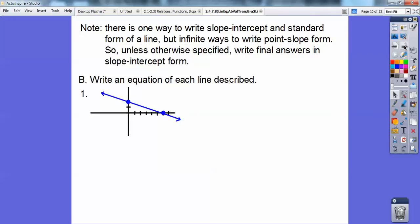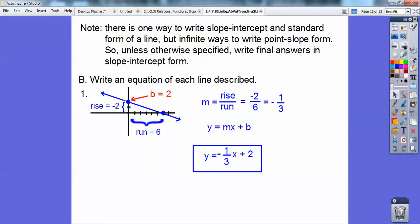Write an equation of each line described. Look at that graph. This is the y-intercept right here, so I know it's going to be y = mx + 2. And then my slope, they gave me a picture, so the rise is sunk 2, and the run is 1, 2, 3, 4, 5, 6. So -2/6 would be -1/3. So there's your slope, -1/3. Y = mx + b, so y = -1/3x + 2. That's your answer.